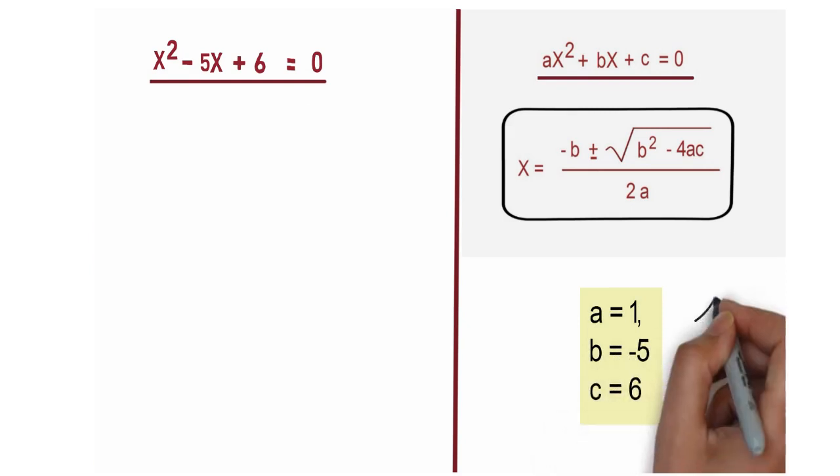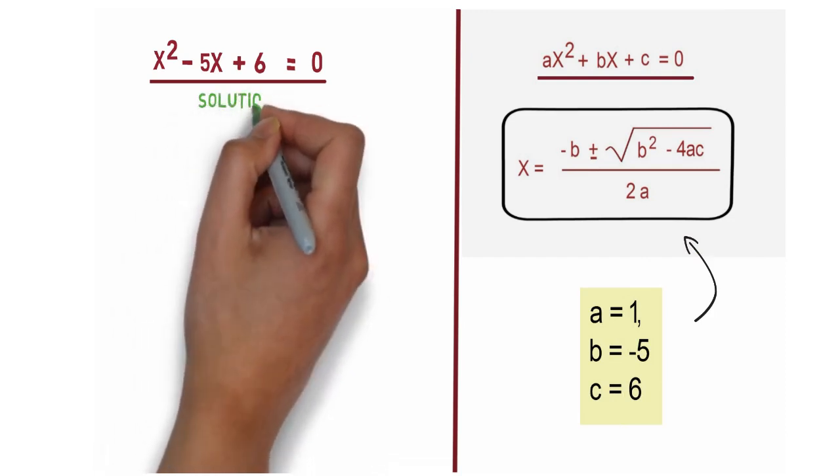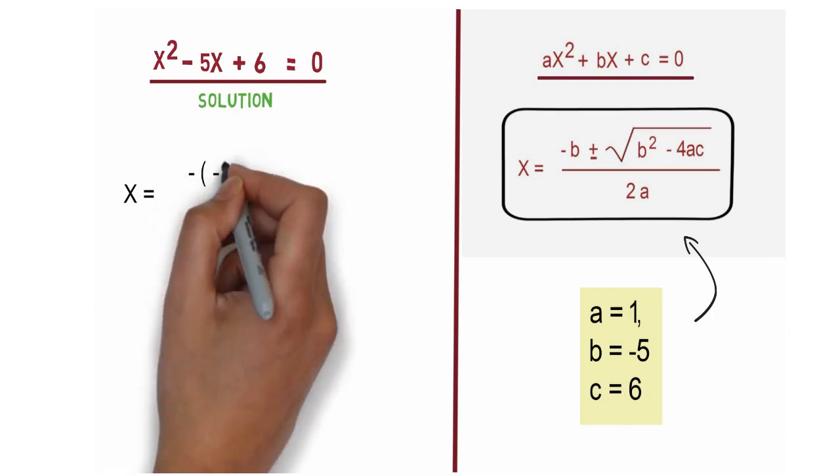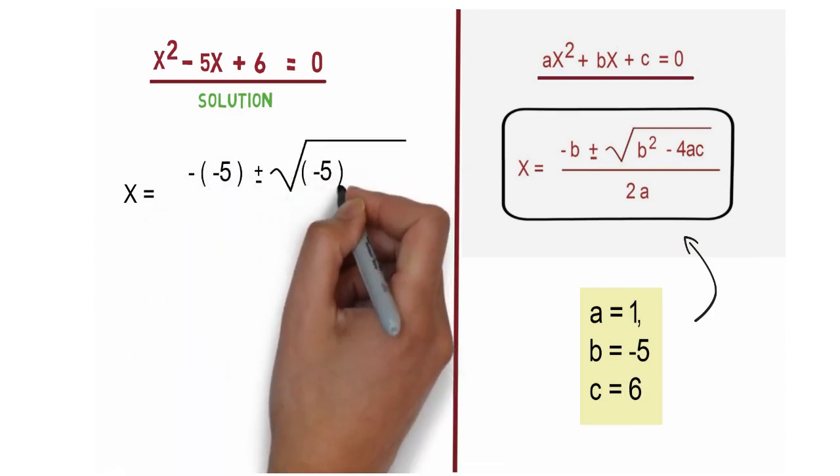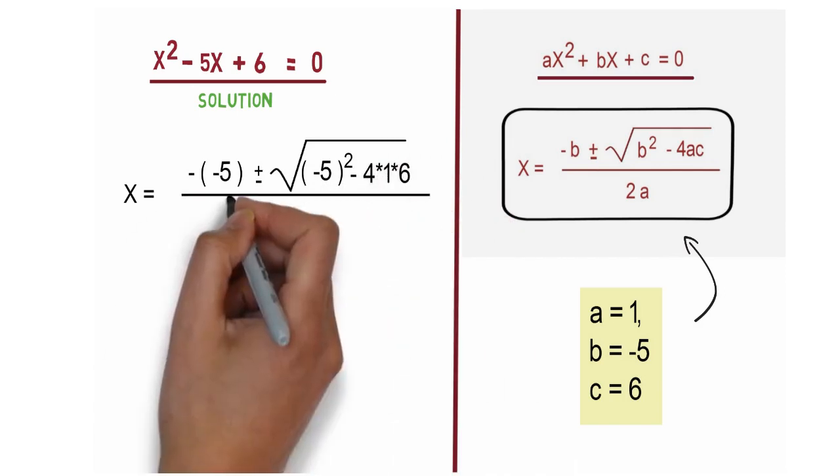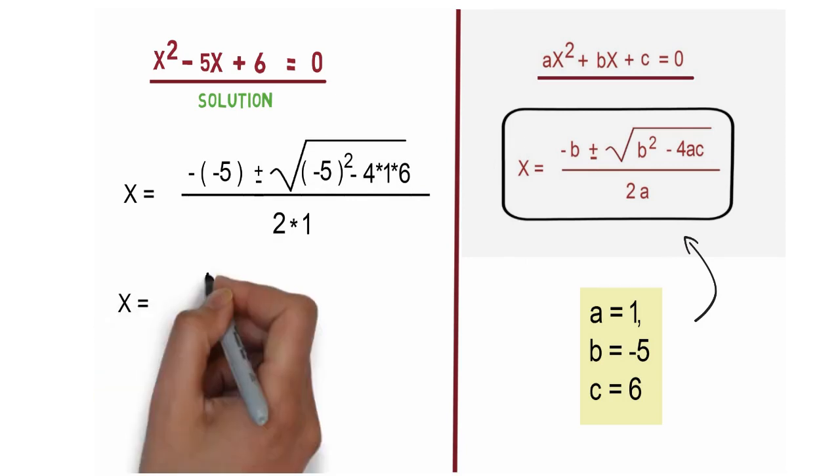Put all these values into the formula. So x = -(-5) ± √((-5)² - 4(1)(6))/2(1). Now if I simplify this, x = 5 ± √(25 - 24)/2.